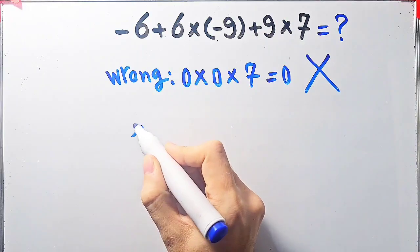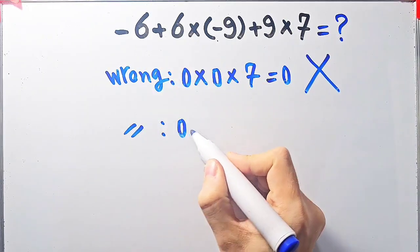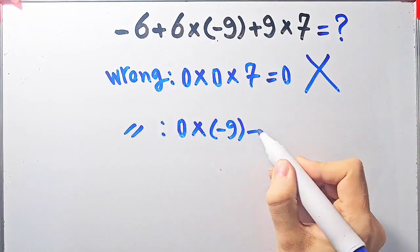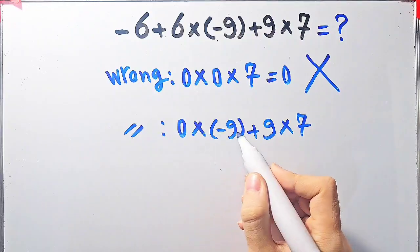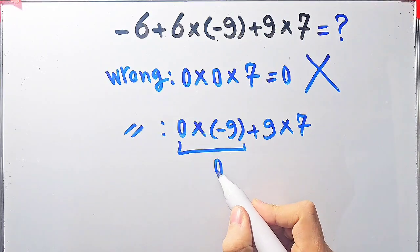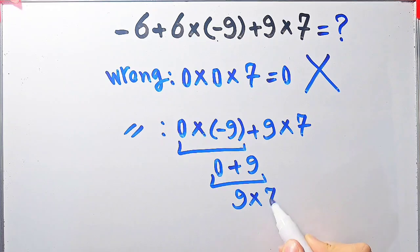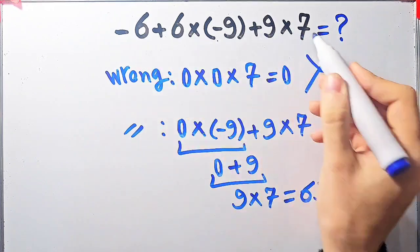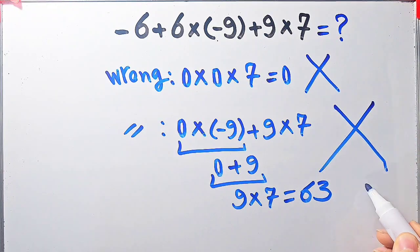Again, some people solve it like this: negative 6 plus 6 equals 0, then 0 times negative 9 equals 0, then 0 plus 9 equals 9, and 9 times 7 equals 63. They say the final answer equals 63, but this answer is definitely wrong.